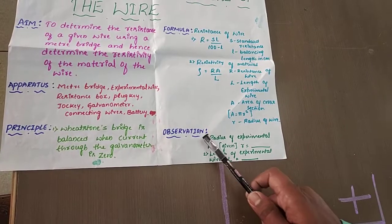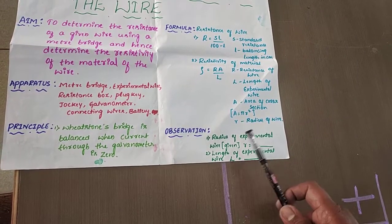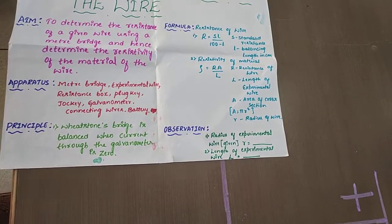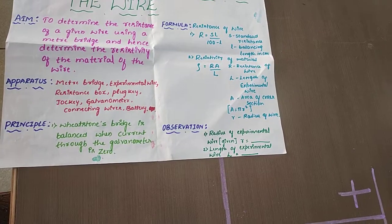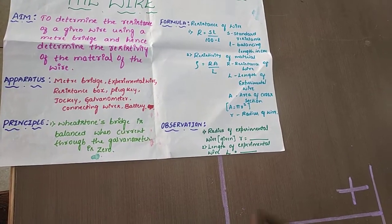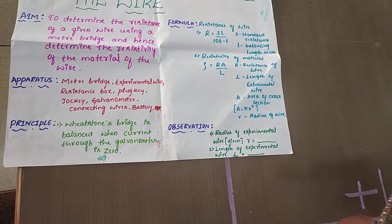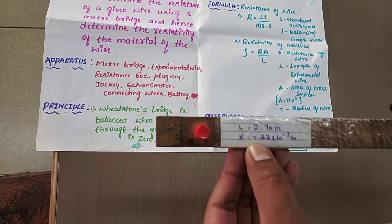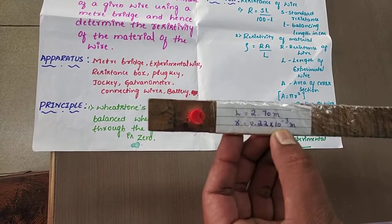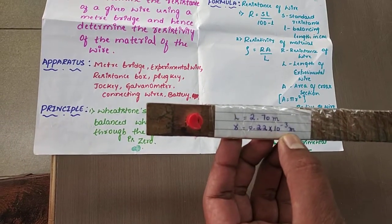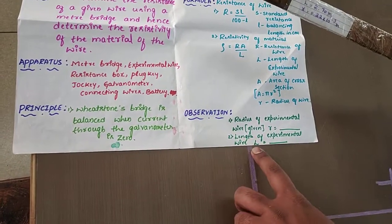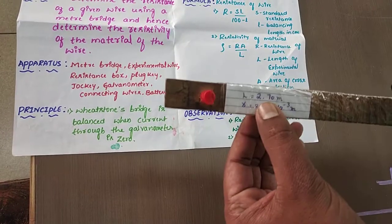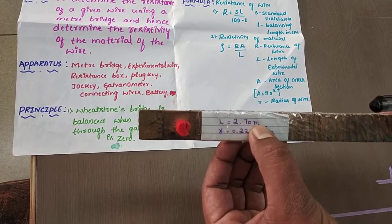Next is observation. Radius of the experimental wire: r = 0.22 × 10⁻³ meter. And the length of the experimental wire: capital L = 2.70 meter.